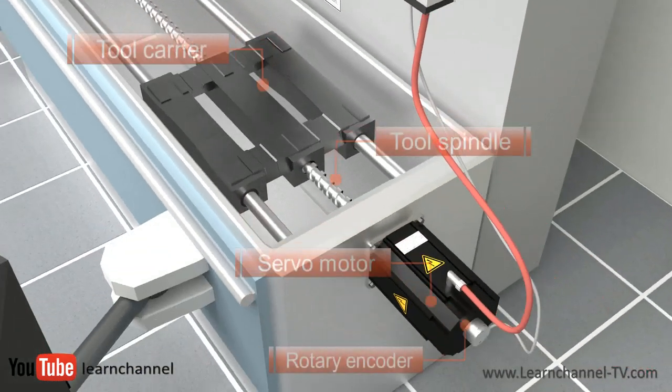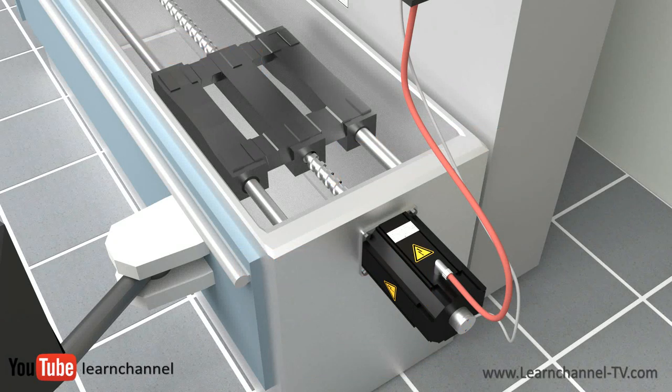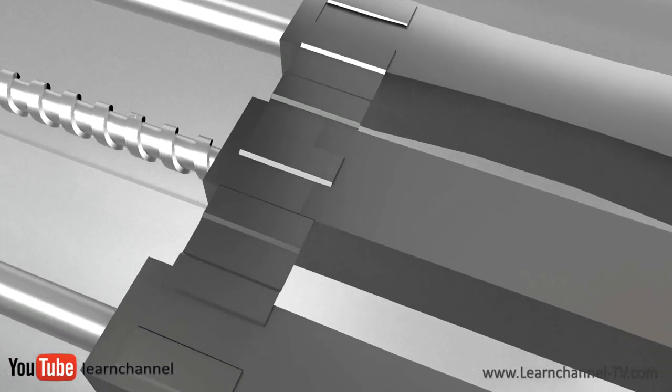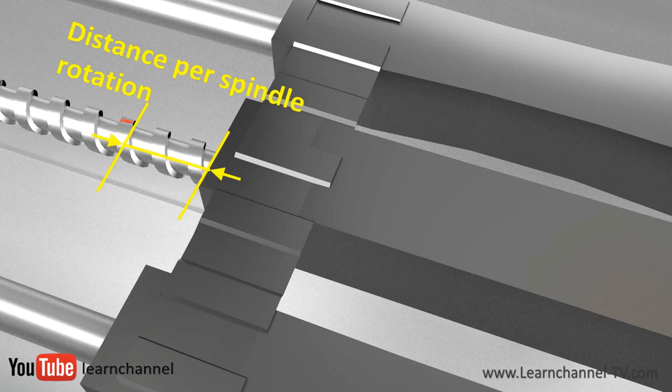Within an indirect measuring system, an encoder is mounted to the shaft of a servo motor. This way, the rotation motion of the spindle can be captured. The position of the tool carrier itself can be determined indirectly via the size and pitch of the spindle.